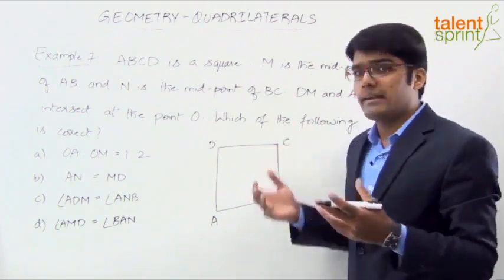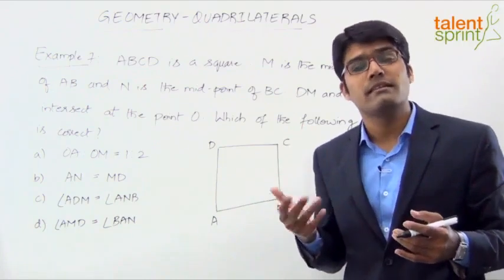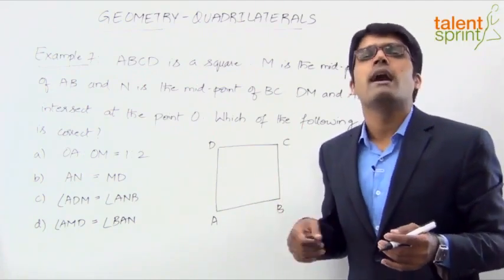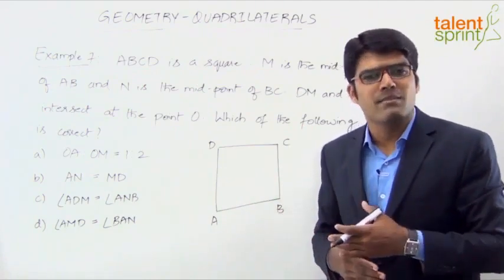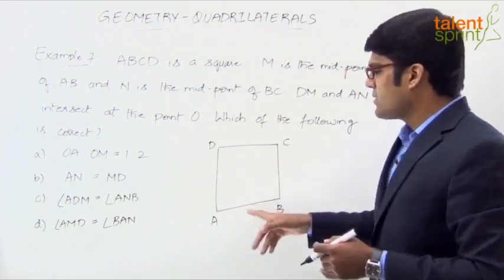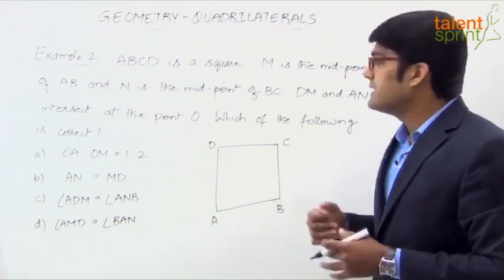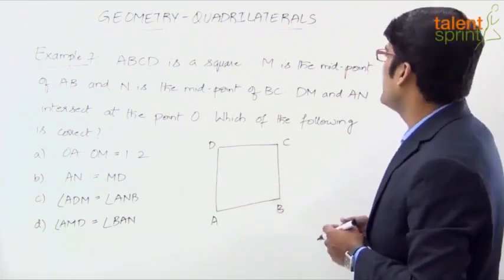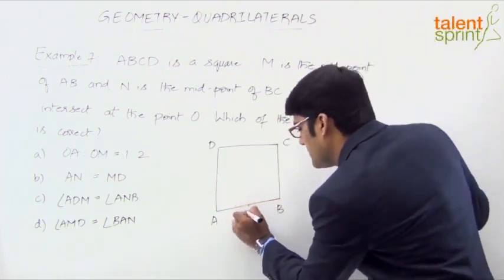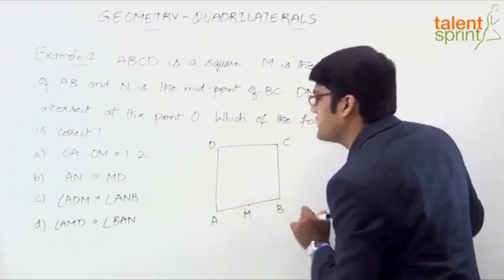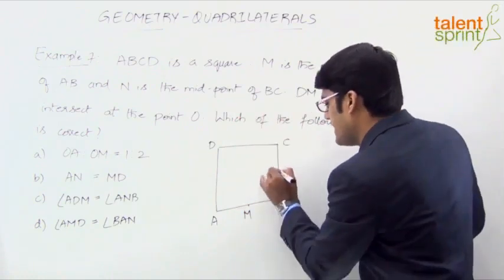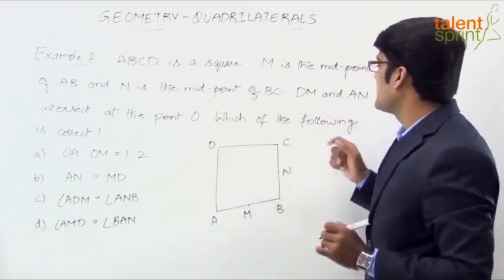Likewise, if it is a rectangle, opposite sides are parallel, opposite sides are equal, angles are 90 degrees, and diagonals bisect each other. So ABCD is a square with 4 equal sides. Then M is the midpoint of AB — let us draw the midpoint. And N is the midpoint of BC — let us place N on BC.